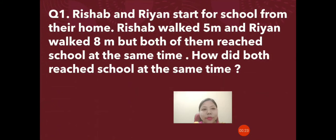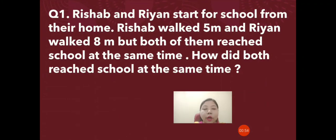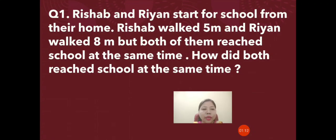Let us discuss two questions. Rishabh and Riyan started for school from their home. Rishabh walked 5 meters and Riyan walked 8 meters, but both of them reached school at the same time. How did both reach school at the same time? The distance covered by each was different — 5 meters and 8 meters — but the time of arrival was the same. You need to justify how this is possible even though both covered different distances.